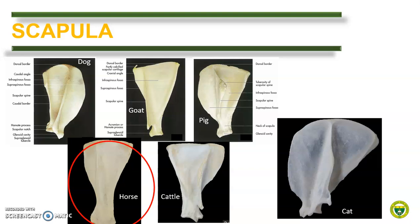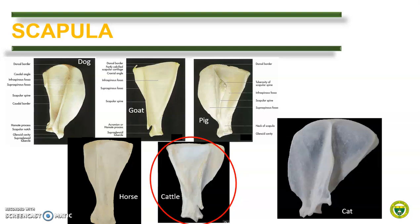Also in the horse, the scapular spine fades distally and there is no acromion. In ruminants, the goat scapula is distinctly triangular in shape, with equal fossae, the infraspinous being broader. There is also an acromion but not as distinct as in the dog. The scapula of the cattle is also distinctly triangular like the goat but bigger in size, with equal-sized fossae and the acromion present at the distal end of the scapular spine.